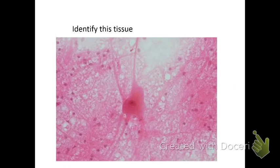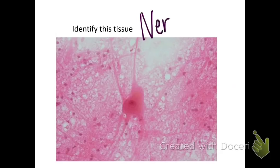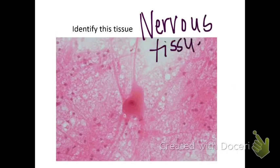This one should be easy — it doesn't look like the other ones. This is nervous tissue. You could actually say that one cell is a neuron.